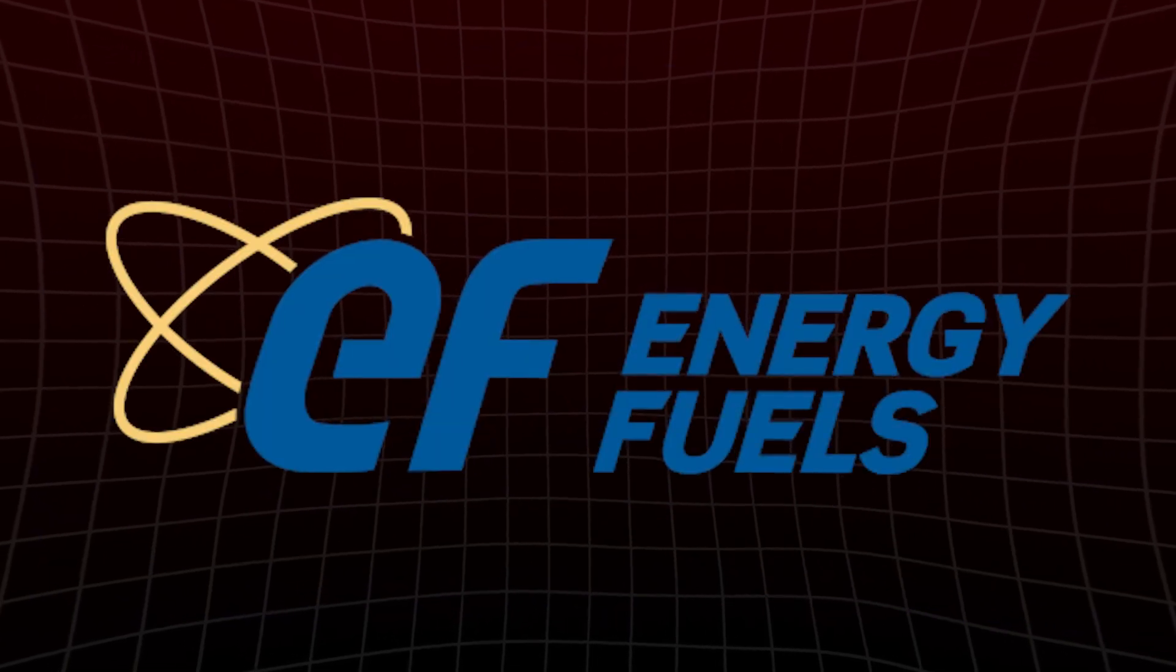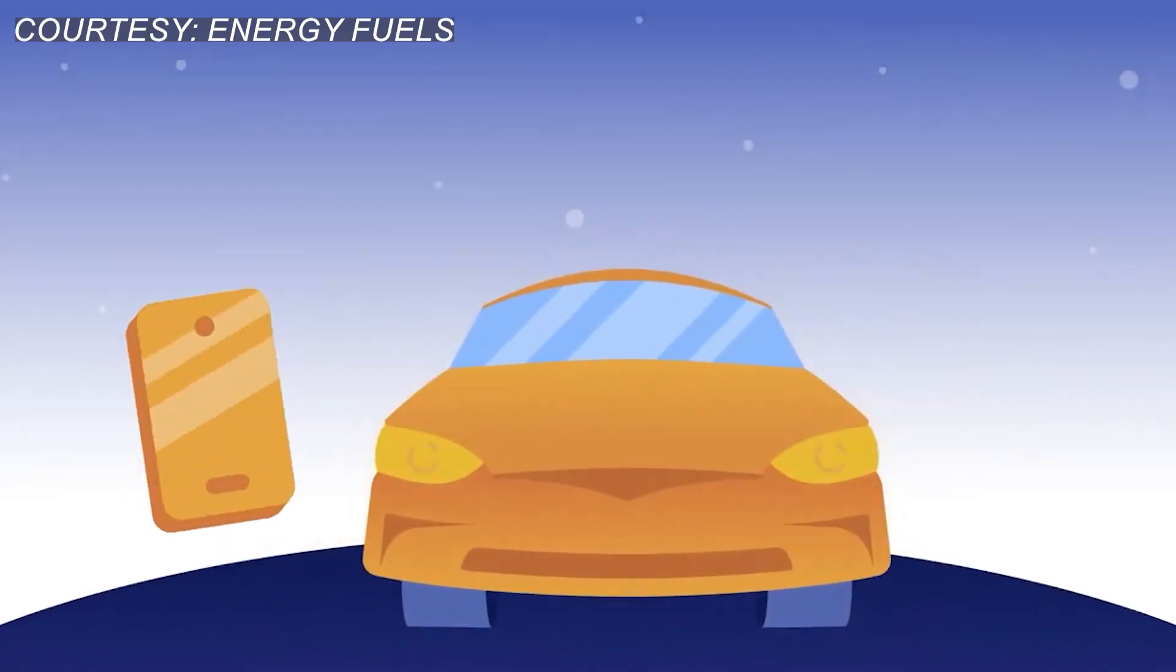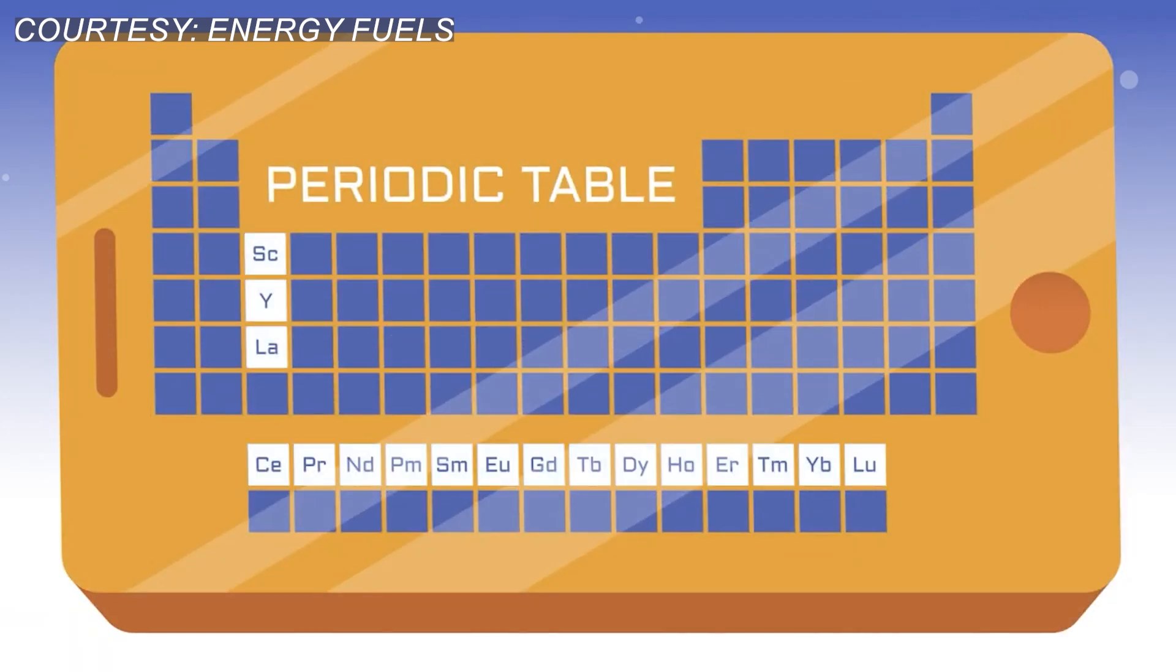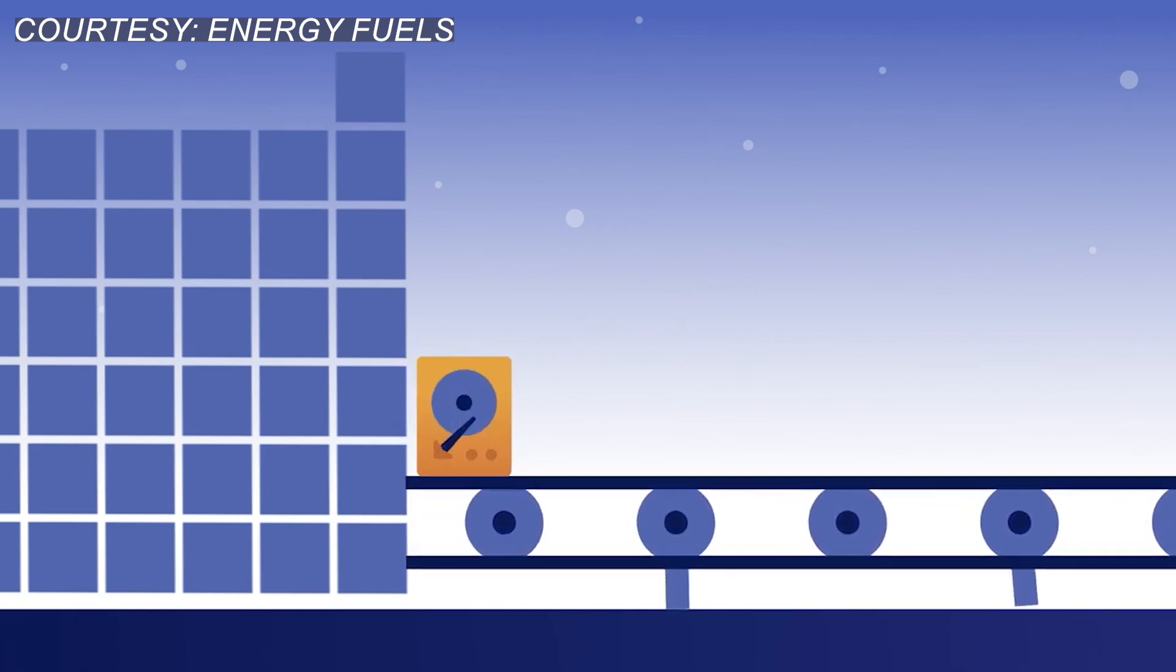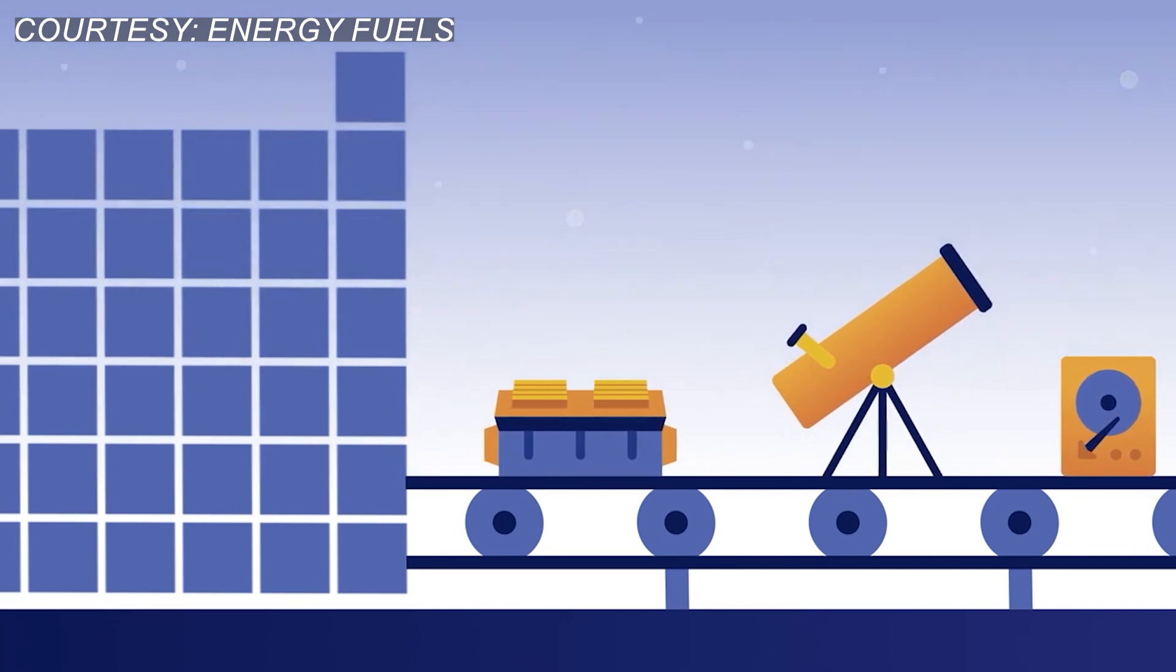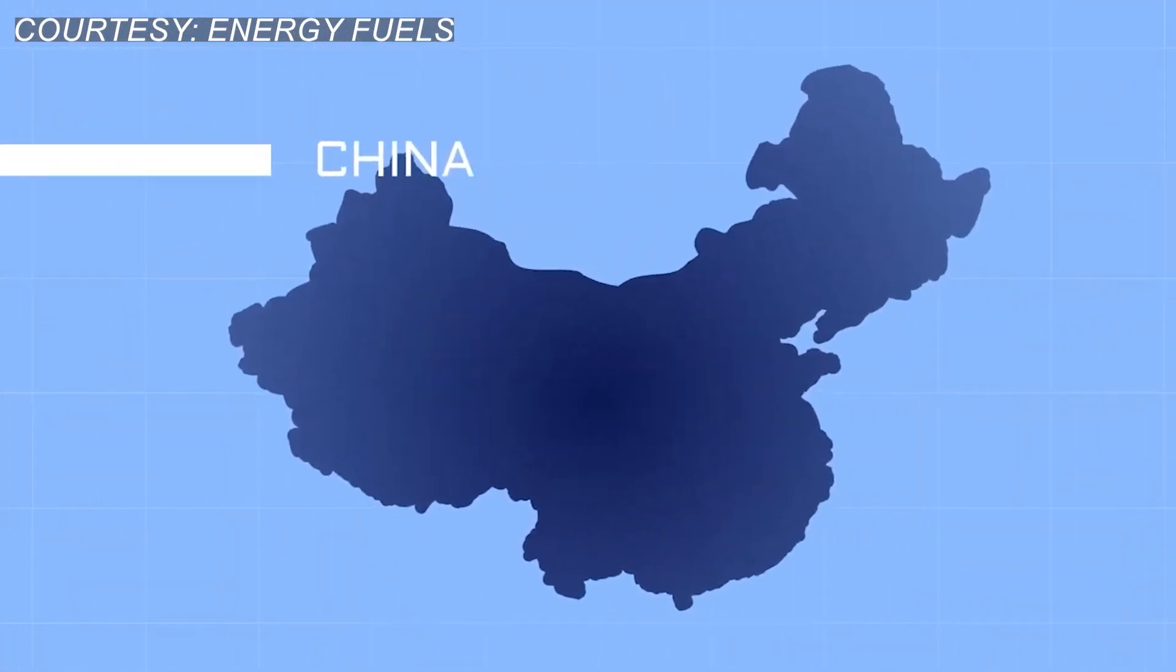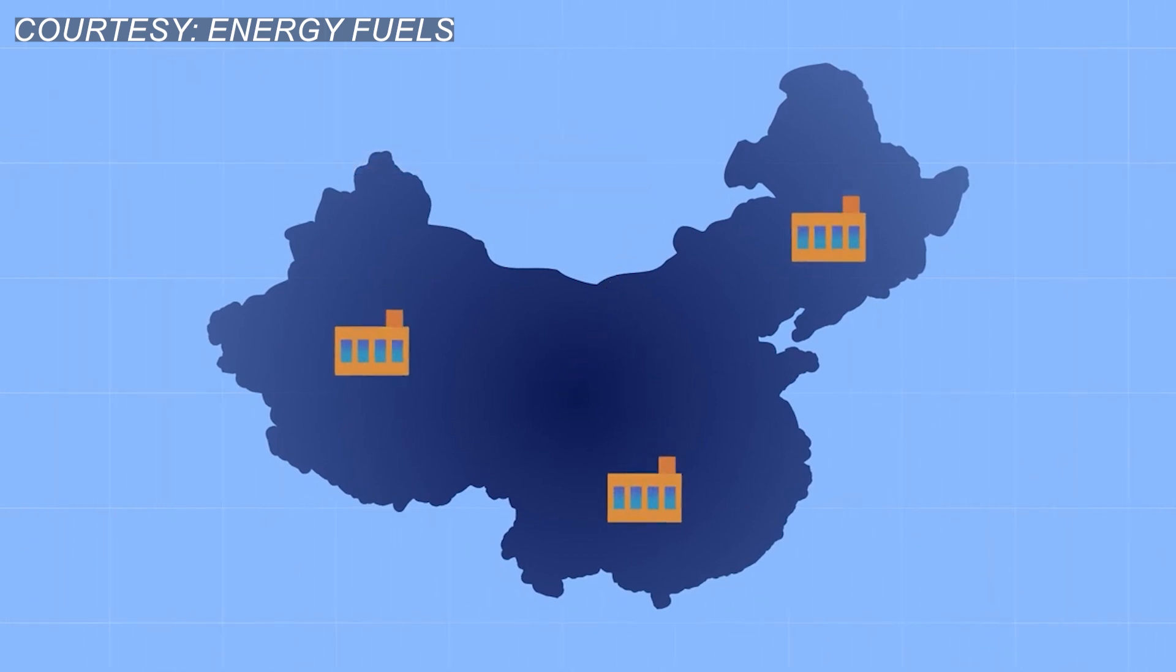Rounding out the list is Energy Fuels, Inc., ticker symbol UUUU, a company that's quietly placing itself at the heart of one of the most strategically critical industries of the decade — rare earth elements and uranium. While its track record has been uneven and its revenue modest, recent developments are beginning to reshape the long-term outlook for this U.S.-based producer. And it's catching the attention of investors riding the AI and national security megatrends.